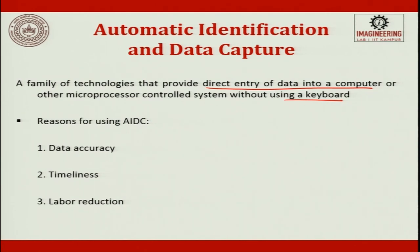These automatic identification systems are being used increasingly to collect data in material handling and manufacturing applications. In material handling, applications include shipping, receiving, storage, sorting, and order picking. In manufacturing, applications include monitoring the status of order processing, work-in-progress inventory, machine utilization, and worker attendance. Biometrics — which identifies fingerprint patterns — is very commonly used, including eye scans for identification.